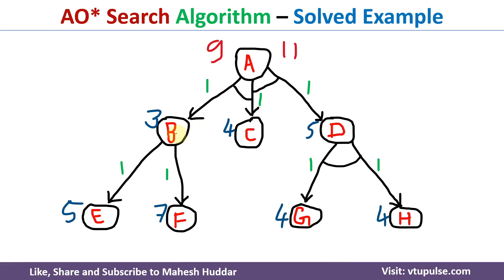Now, if we want to solve B and C — C is already solved because we do not have any further nodes there. But to solve B, we need to solve either E or F, because there is no AND here. To solve E, the cost will be 1+5 = 6. For F, it will be 1+7 = 8. Between 6 and 8, 6 is the better option. So the previous heuristic value of B, which was 3, is replaced with 6.